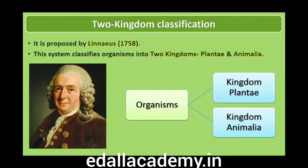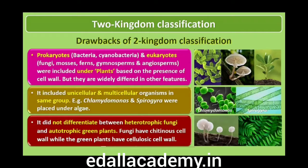In time, a two-kingdom system of classification with Plantae and Animalia kingdoms was developed that included all plants and animals respectively. This system was used till very recently. This system did not distinguish between eukaryotes and prokaryotes, unicellular and multicellular organisms, and photosynthetic green algae and non-photosynthetic fungi. Classification of organisms into plants and animals was easy to understand, but a large number of organisms did not fall into either category. Hence the two-kingdom classification was found inadequate.